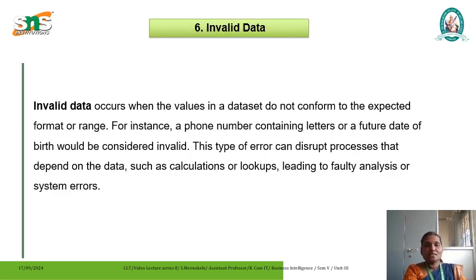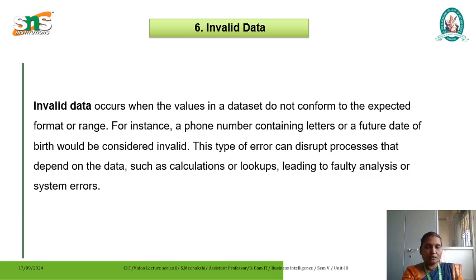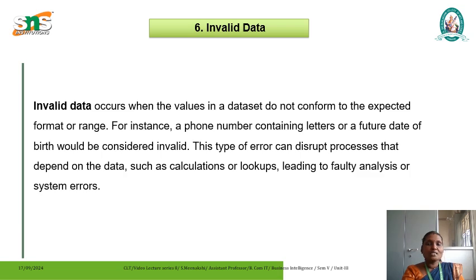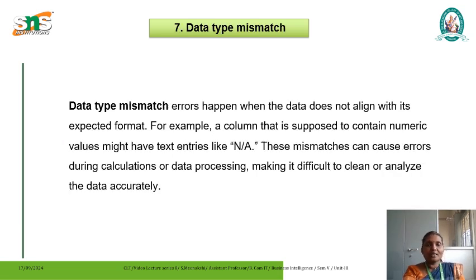The next kind of error is called invalid data. This kind of error occurs when the values in a data set do not conform to the expected format. For example, a phone number containing letters or a future date of birth would be considered invalid. A future date of birth is impossible, and a phone number must consist of only numeric characters, not alphanumeric format. This type of invalid error can disrupt all processes which primarily depend upon the data, such as calculations or lookups, leading to faulty analysis or system errors.